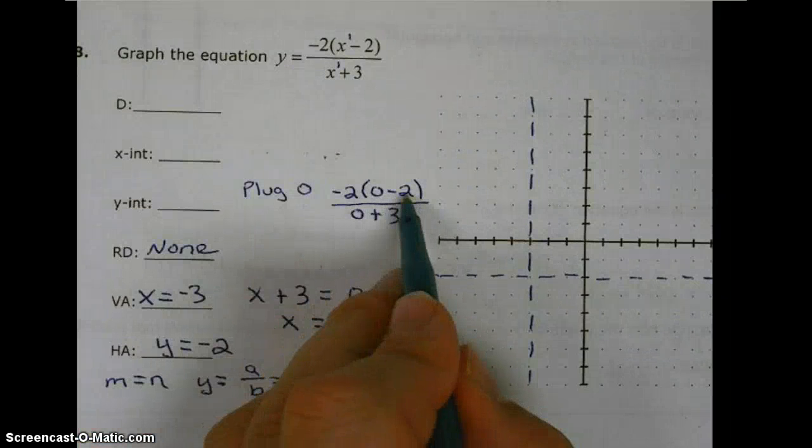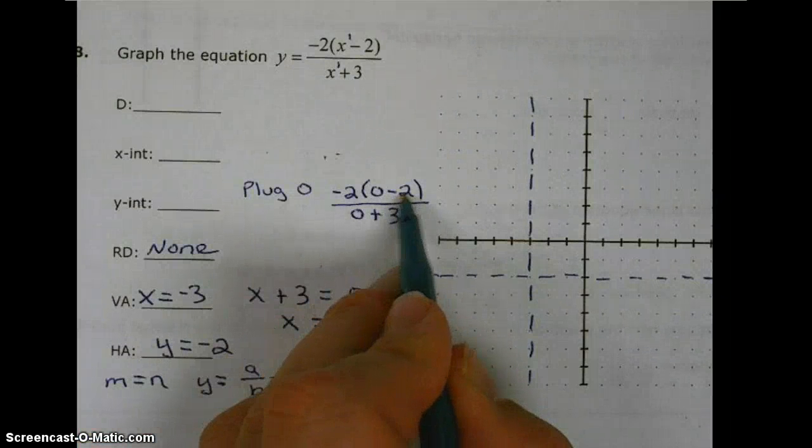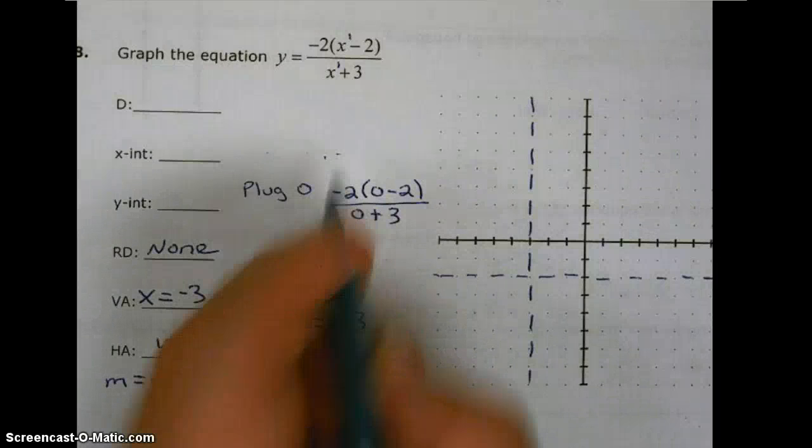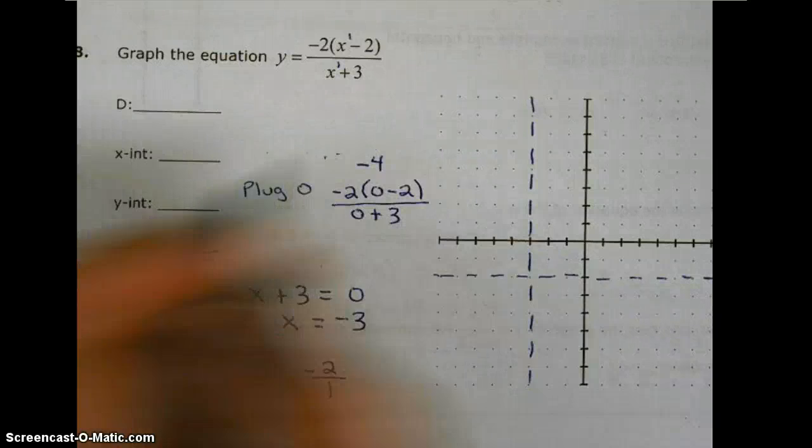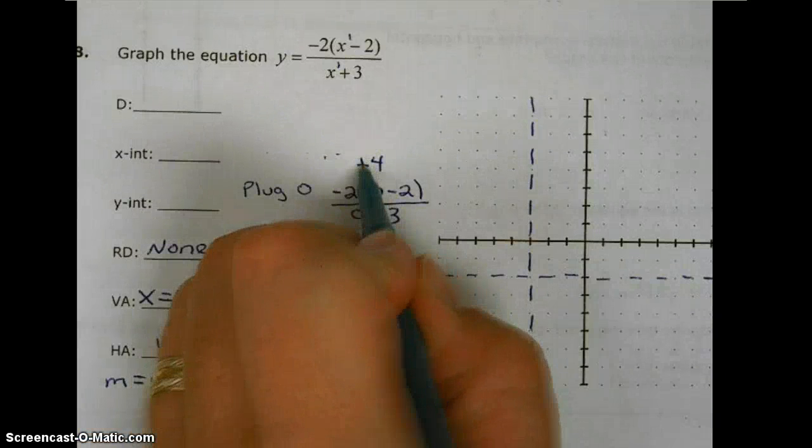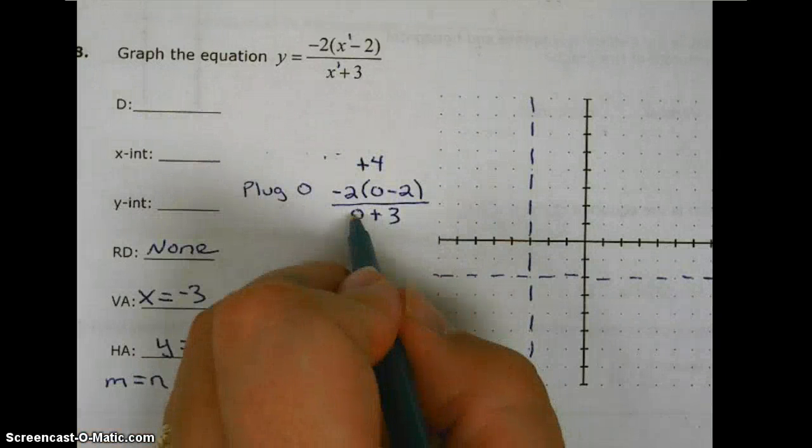So 0 minus 2 is negative 2. Negative 2 times negative 2 is positive 4. 0 plus 3 is 3.